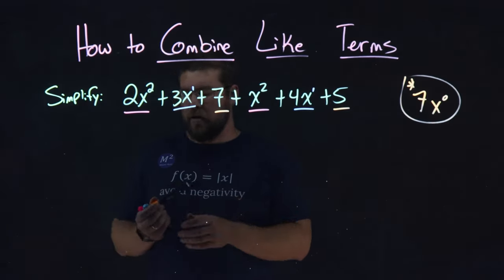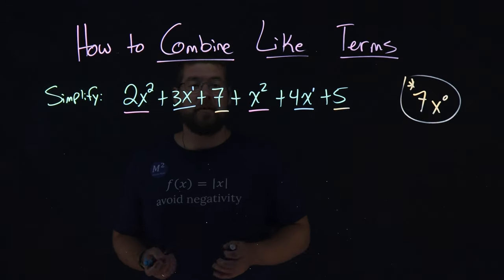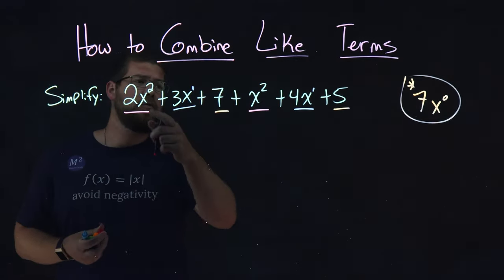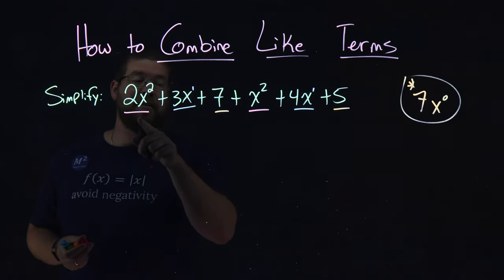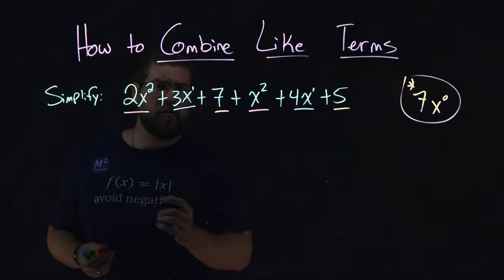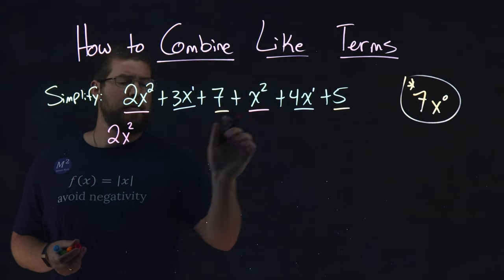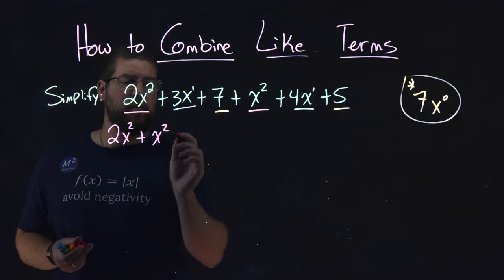Let's reorder them so they are next to each other. We have 2x squared and x squared as our like terms. It's all addition, so it's pretty easy. We have 2x squared plus x squared.